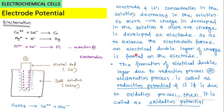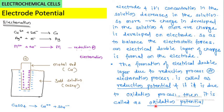As a result, an electrical double layer is formed on the electrode. The formation of an electrical double layer due to the reduction process or electronation process is called the reduction potential. When the double layer is due to oxidation, it is called the oxidation potential.